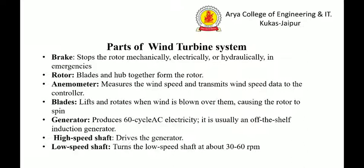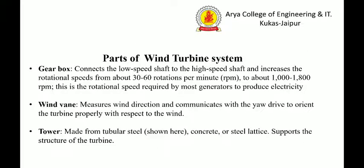Generator — produces 60-cycle alternating current electricity; it is usually an off-the-shelf induction generator. High speed shaft — drives the generator. Low speed shaft — turns at about 30 to 60 RPM. Gearbox — connects the low speed shaft to the high speed shaft and increases the rotational speed from about 30 to 60 RPM to about...